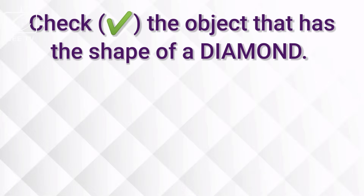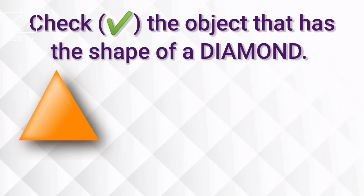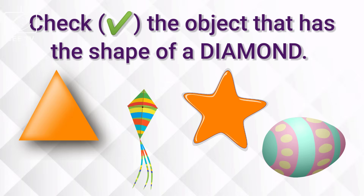Check the object that has the shape of a diamond. The kite has the shape of a diamond. Great job! The kite has the shape of a diamond.